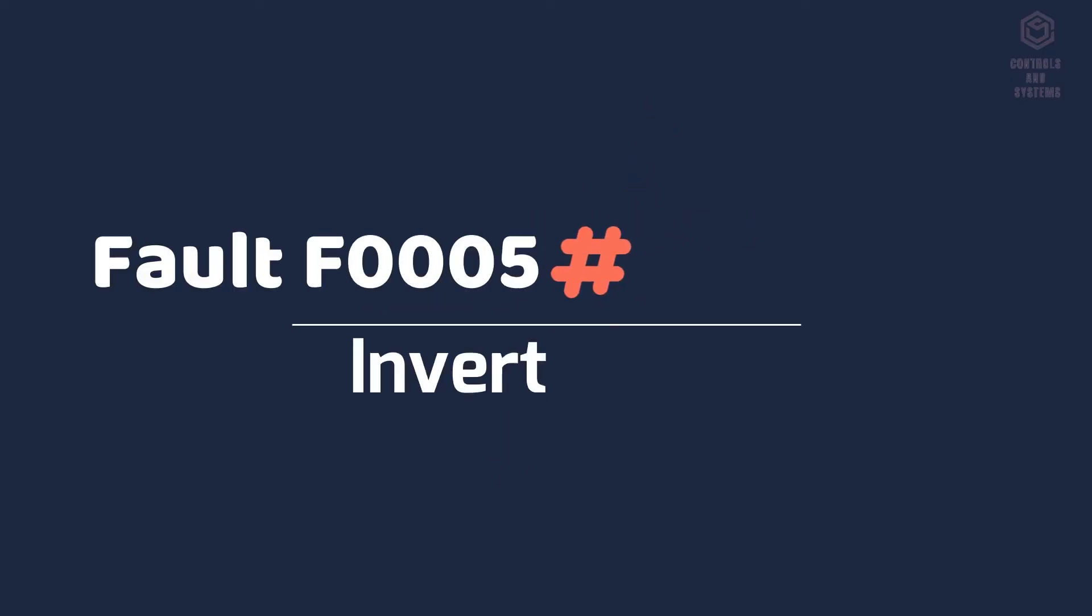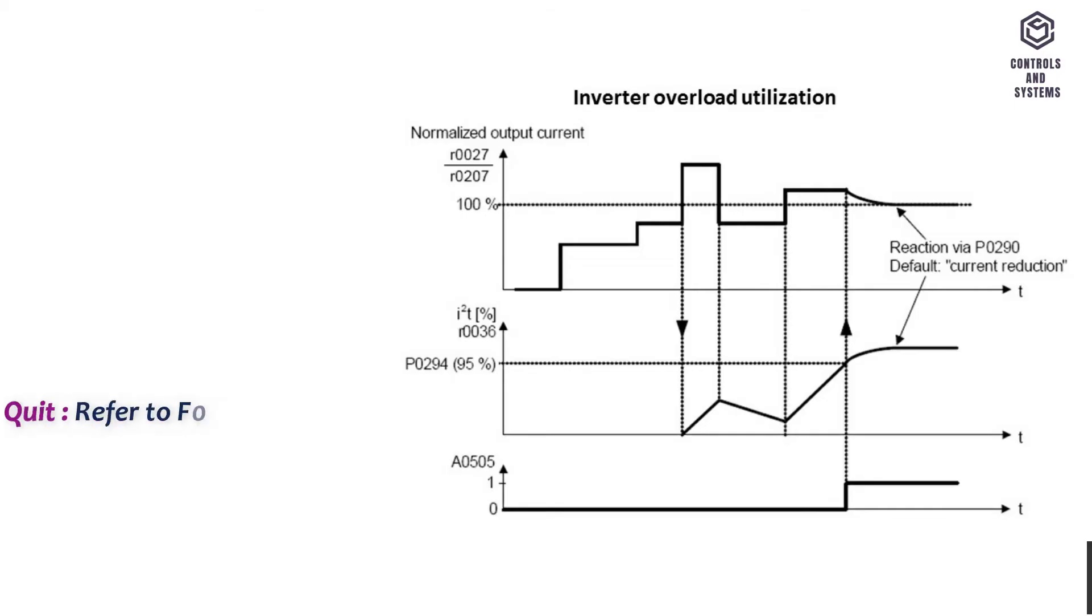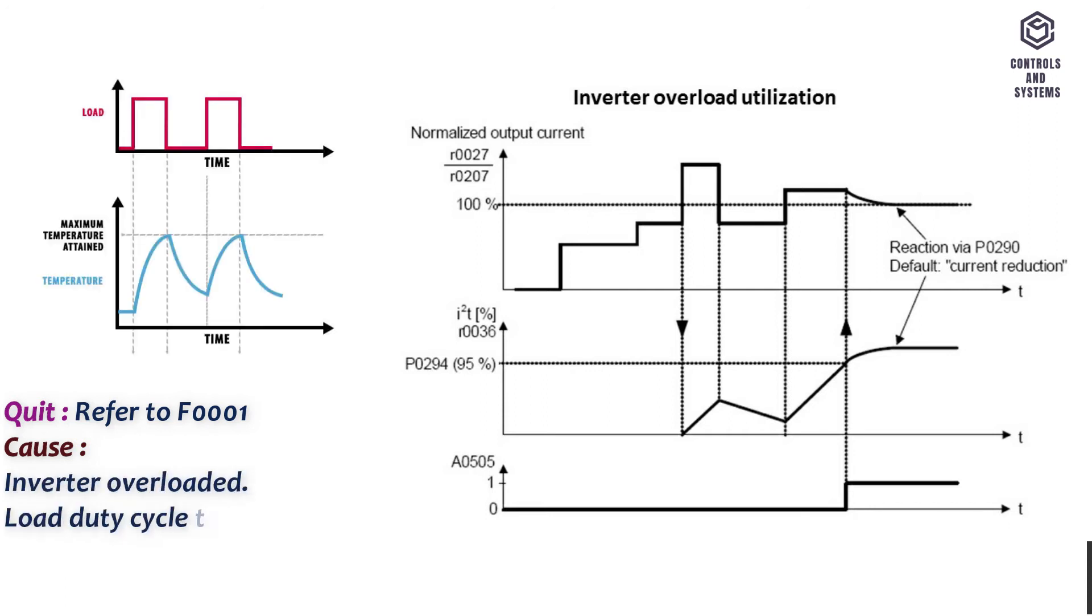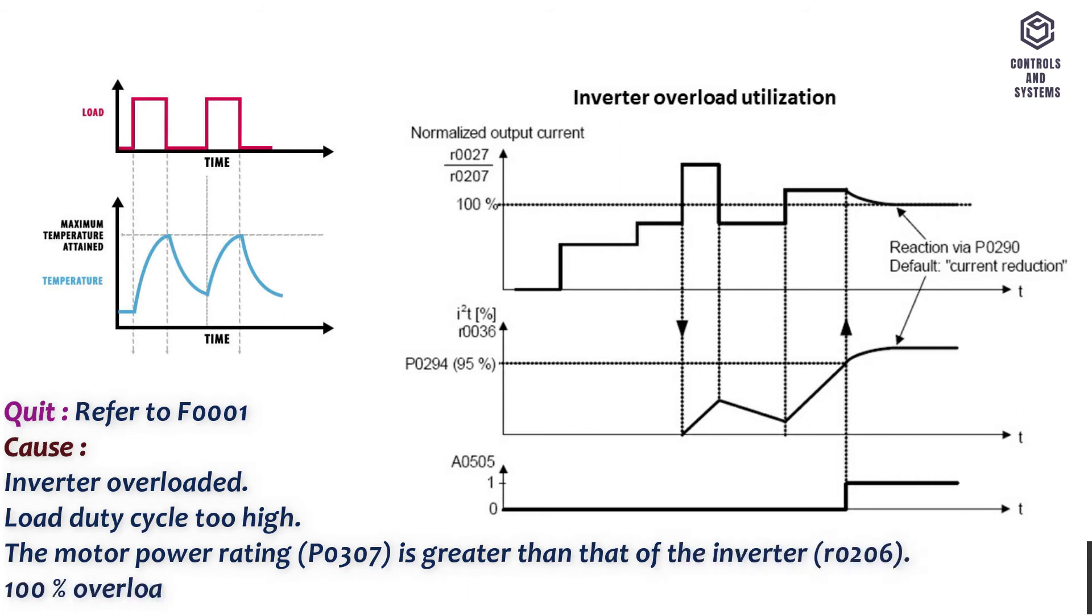Fault F0005 inverter I2T. Quit: Refer to F0001. Cause: Inverter overloaded. Load duty cycle too high. The motor power rating P0307 is greater than that of the inverter R0206. 100% overload reached, refer to utilization R0306.